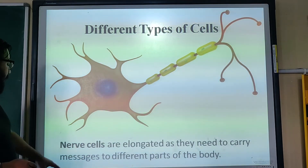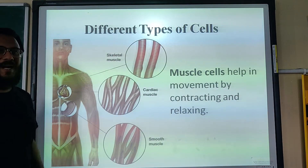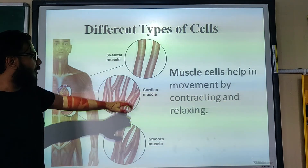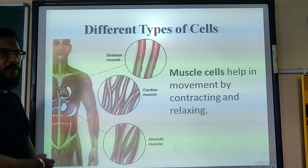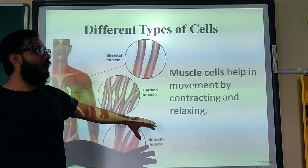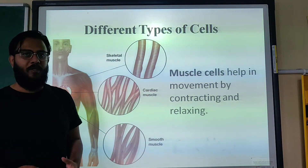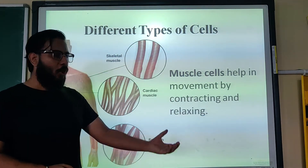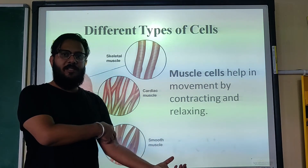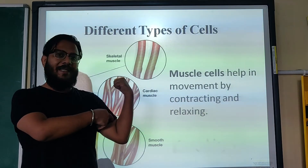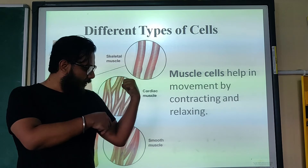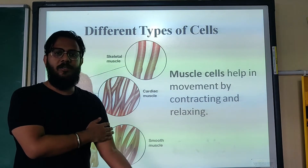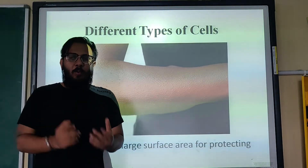Next are muscle cells. There are different kinds: skeletal muscles, which make up the skeletal structure; cardiac muscles, which make up the heart muscles; and smooth muscles inside the body. These muscle cells help in the movement of the body through contraction and relaxation. For example, when we move our arm, the bicep contracts — you can feel a tight bundle of muscle — and when you release it, the muscle relaxes.